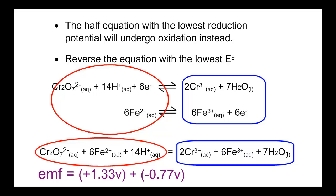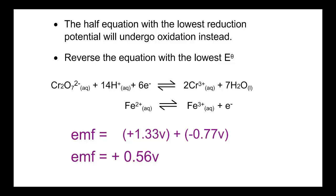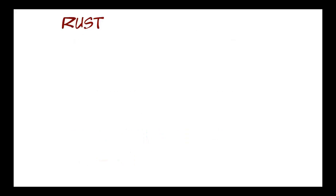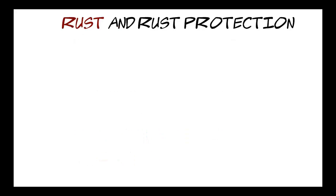And there we have the balanced redox reaction. If you were to create an electrochemical cell by coupling these two half-cells, there's the voltage: plus 0.56 volts. If you've done it correctly, the EMF should always turn out to be positive. Next, let me take a look at rust and rust protection by way of explaining how we deal with three or more half-equations, or half-cell reactions, in the same system.